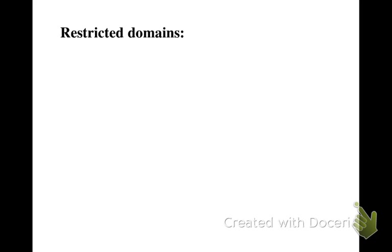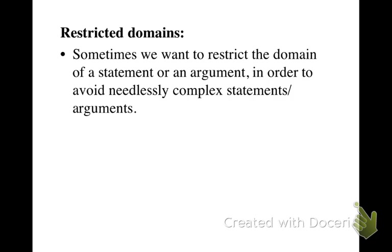This video will explain how to translate predicate statements with restricted domains. A domain is really what the statement or the argument is about — it's the class of individuals that the statement is supposed to apply to. Normally, the domain is just the entire world and we don't need to say that. However, sometimes we want to restrict the domain in order to avoid needlessly complex statements or arguments.